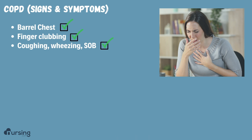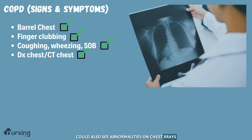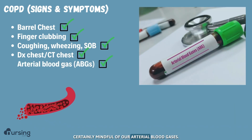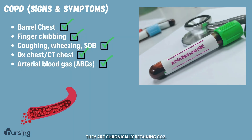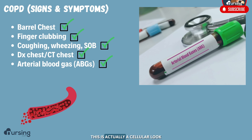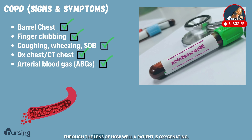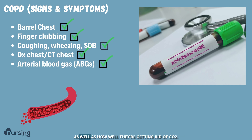Patients are going to have a cough, but we're also going to hear wheezing. You could also see abnormalities on chest x-rays and CTs of the chest, as well as something we'll certainly be mindful of: arterial blood gases. Remember, in patients who have COPD, they are chronically retaining CO2 — their CO2 is chronically high. This is actually a cellular look through the lens of how well a patient is oxygenating, as well as how well they're getting rid of CO2.